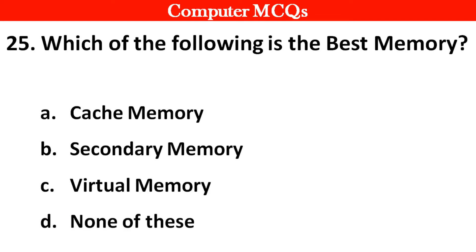Next question: Which of the following memories is the best memory? Options: A. Cache memory, B. Secondary memory, C. Virtual memory, D. None of these. Right answer is option A — Cache memory.